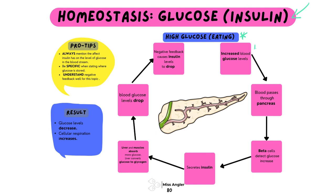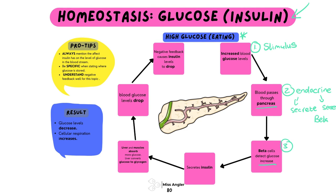We always need to begin our explanation with some kind of stimulus, and the stimulus is an increased blood glucose level because you've eaten your food. Now that blood that is raised in glucose is going to pass through your pancreas. Your pancreas is an endocrine gland, and it actually has two really cool abilities: it has the ability to secrete out a hormone, but it also has the ability to sense. In this case it is going to use its beta cells, and those beta cells are going to detect that there is an increase in the glucose of your bloodstream.